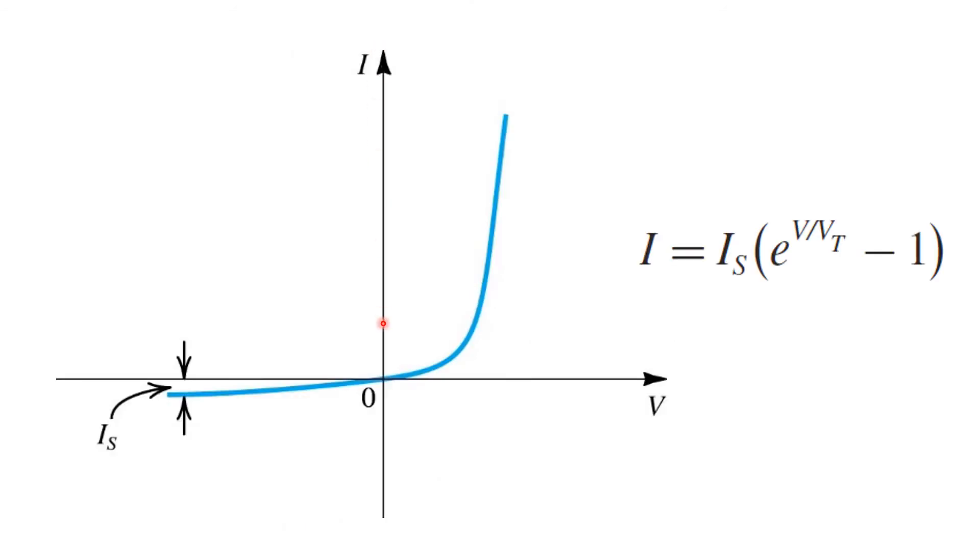Here's a plot of the IV characteristic of the PN junction. So you see that with reverse voltage applied, we've got a small reverse current IS flowing. With forward voltage applied, the forward current increases rapidly. Overall, the IV characteristic is very accurately modeled by this exponential relationship between current and forward voltage applied.